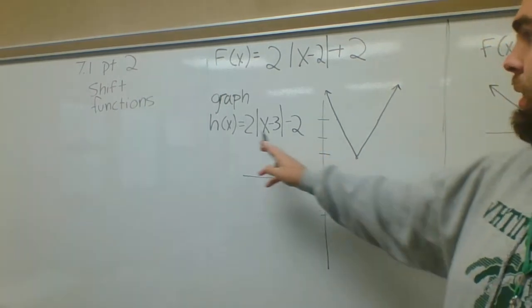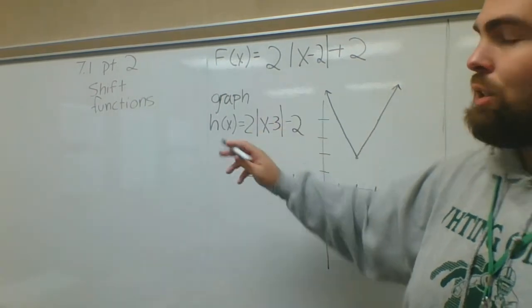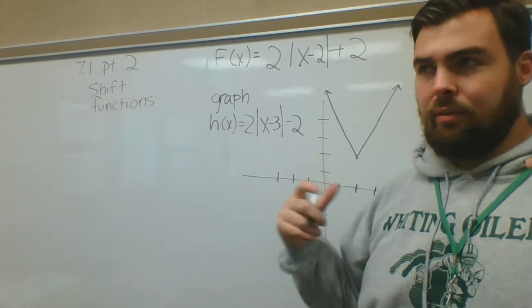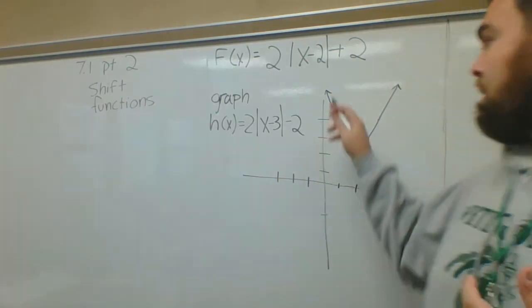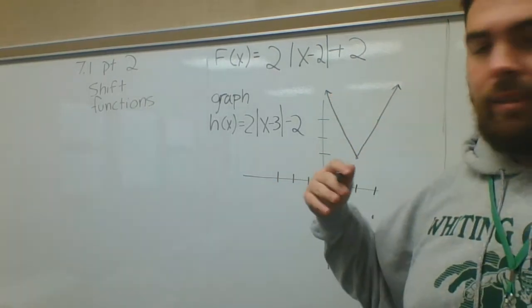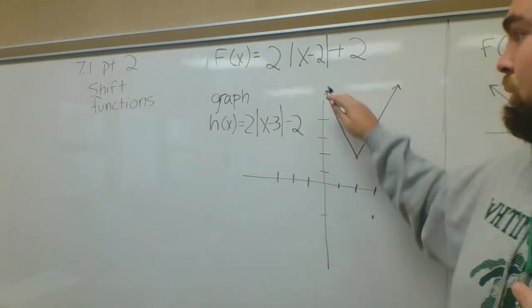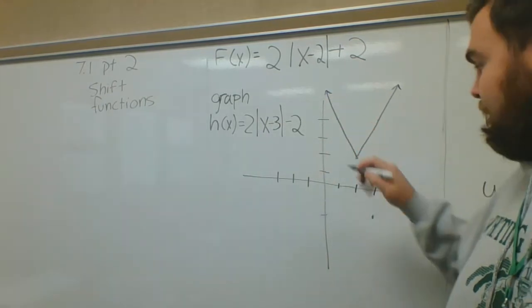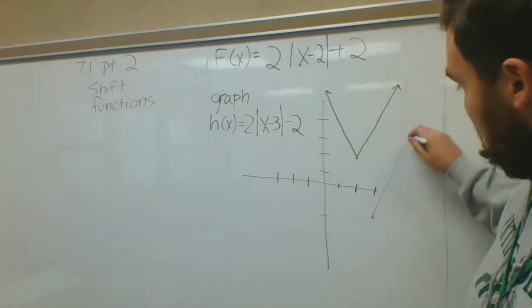I can go 1, 2, 3, let's go down 1, 2. Keep in mind this first number didn't change, that's gonna change the shape of the graph or the function. This number didn't change, still 2, so it should be the same slope.